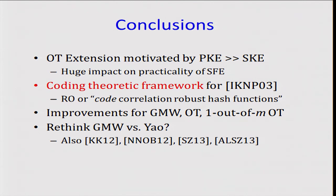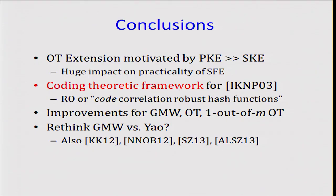To wrap up, we saw that OT extension is motivated by this difference in efficiency between public key primitives and symmetric key primitives. And this has had a huge impact on the practicality of secure function evaluation. In this talk, we proposed a coding theory framework for IKNP. This can be proven secure in either the random oracle model or using a special type of hash function known as correlation robust hash functions, which are a generalization of the IKNP correlation robust hash functions. As a result, we can get concrete improvements for multiparty GMW, for one out of 2 OT, as well as for one out of M OT if you use more sophisticated codes.